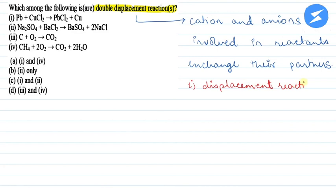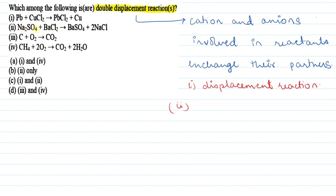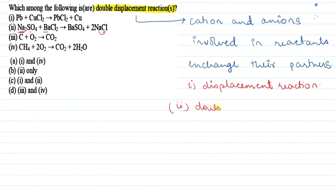Reaction number two is Na₂SO₄ and BaCl₂ giving BaSO₄ and NaCl. Here, sodium and barium cations are exchanging their respective anions. Sodium is present with the sulfate anion on the reactant side, whereas it is present with the chloride anion on the product side. So yes, this is a double displacement reaction.